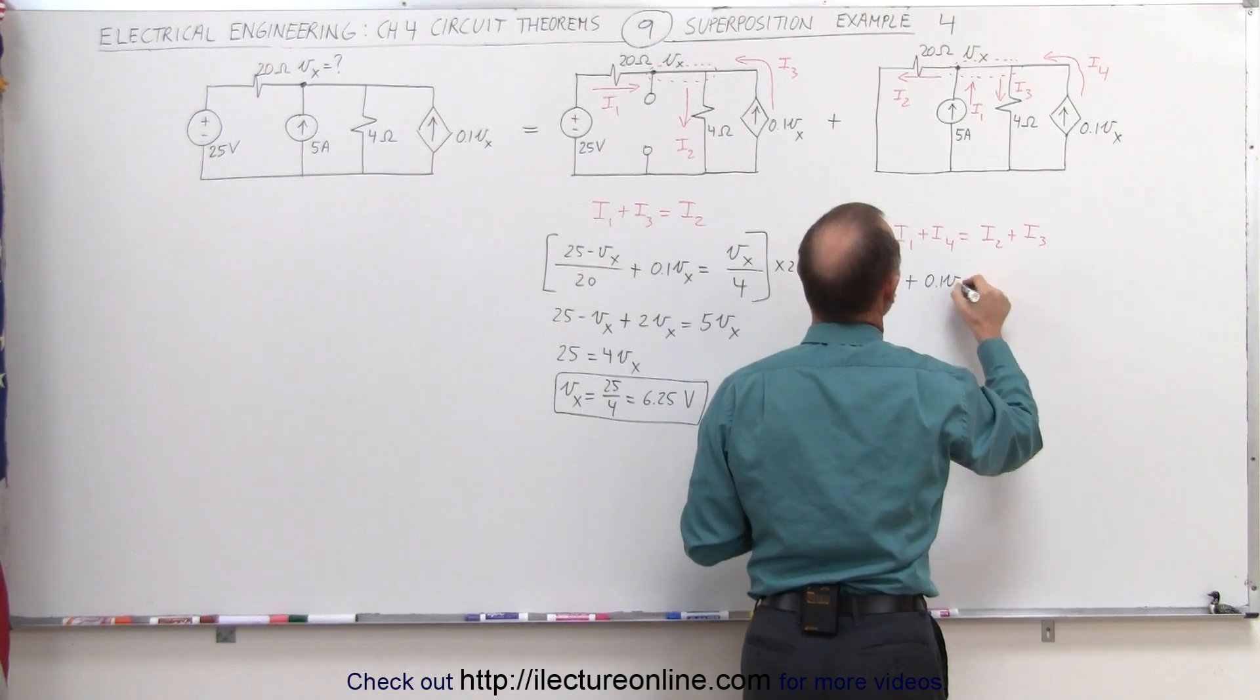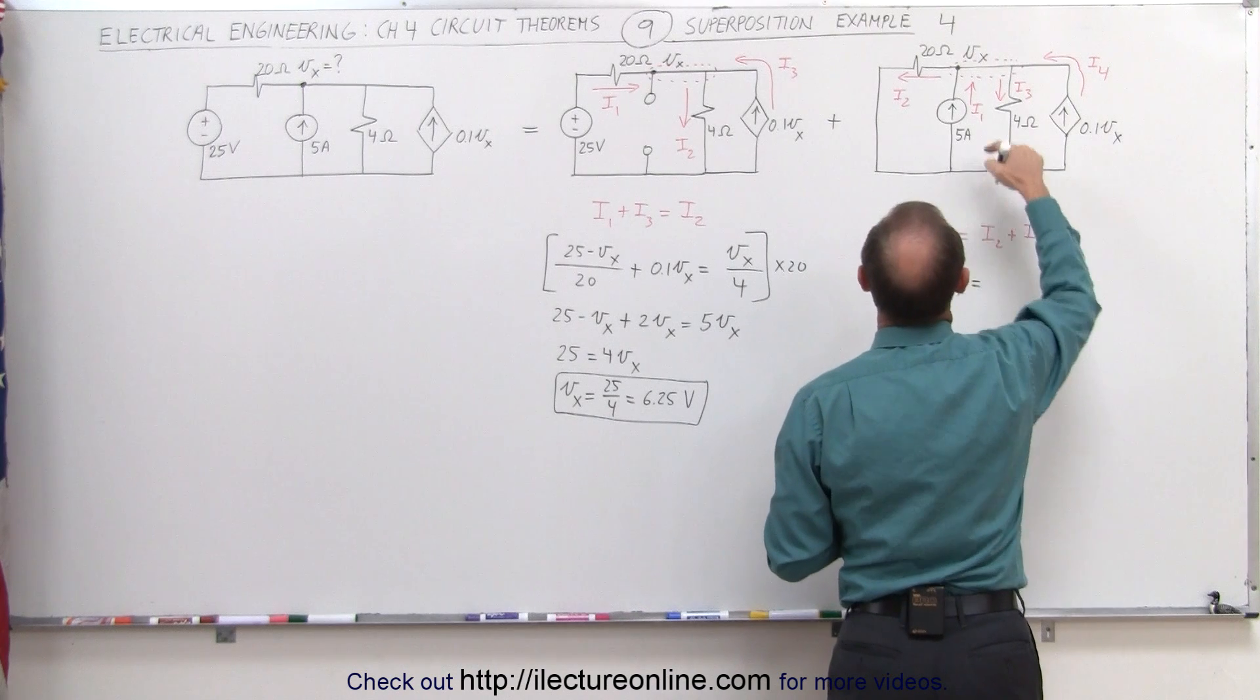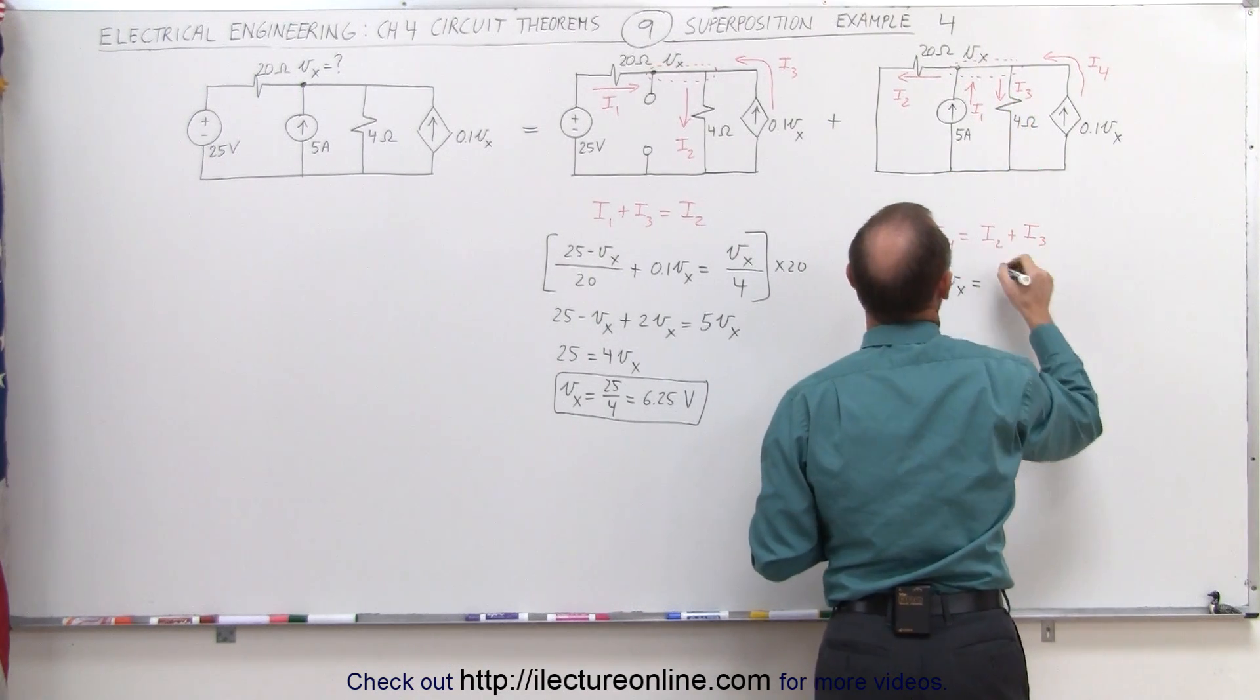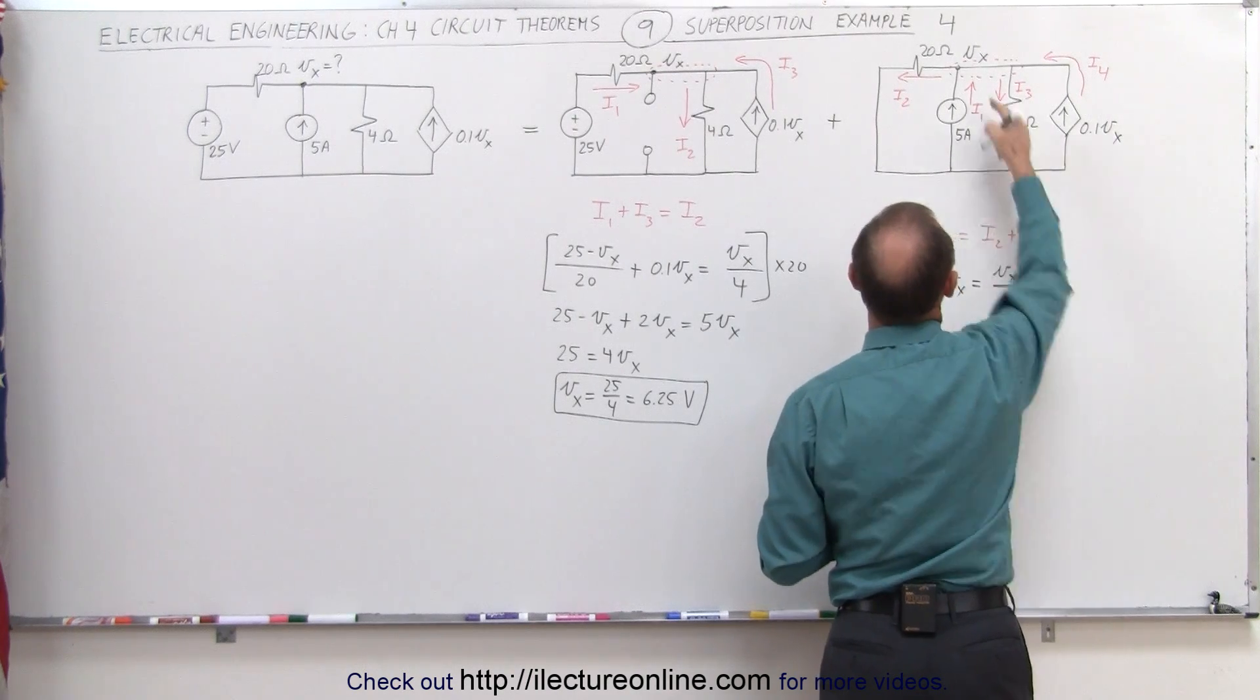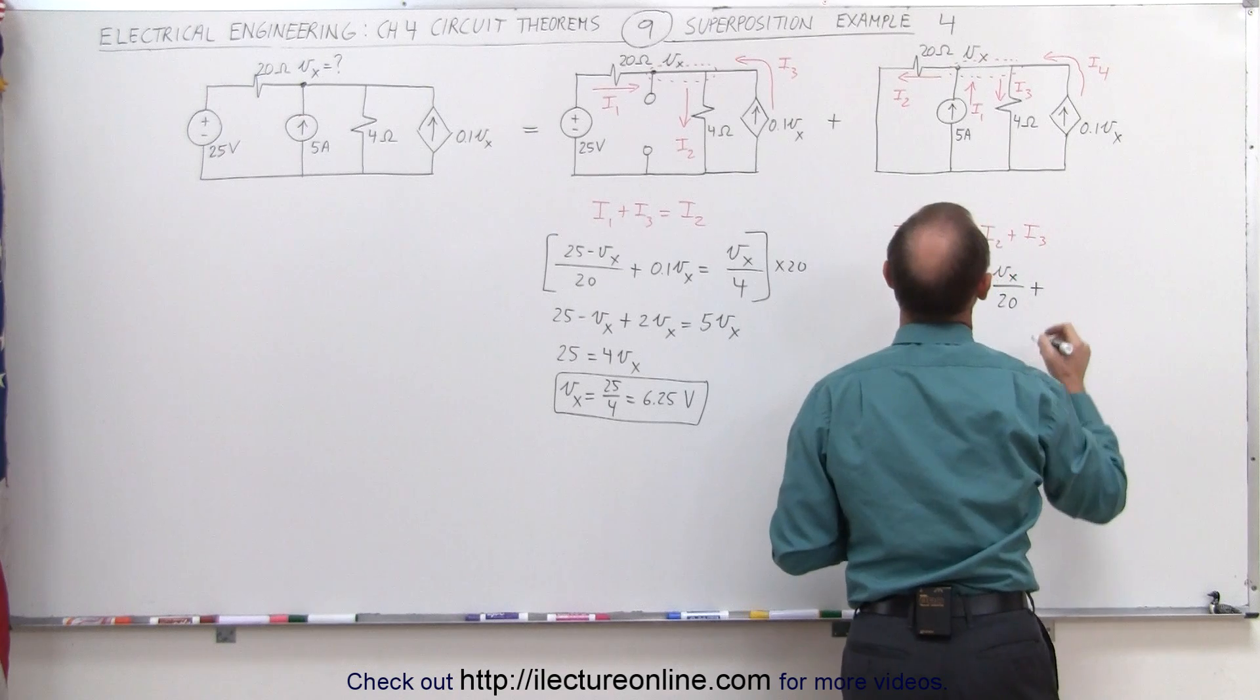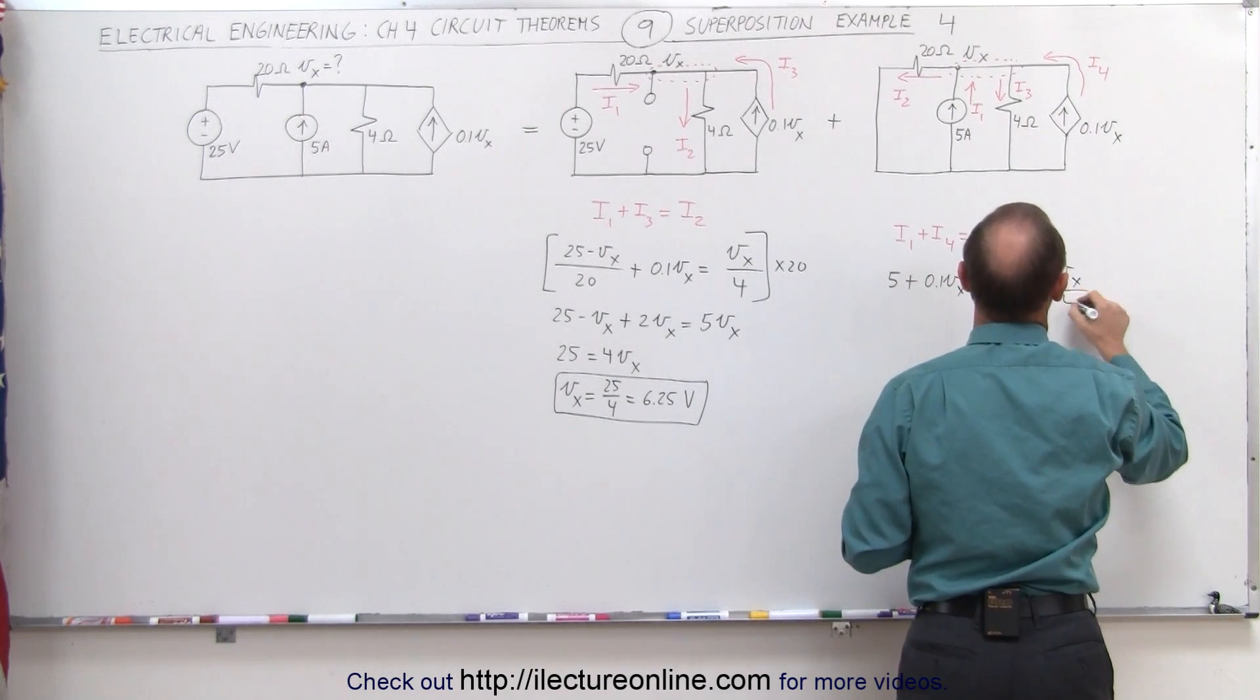0.1 V sub X equals I2. I2 would be the voltage difference between there and there, assuming this is at 0 volts, that would be V sub X divided by the resistance in between, 20 ohms, plus I3, which is V sub X divided by the resistance in between, 4.